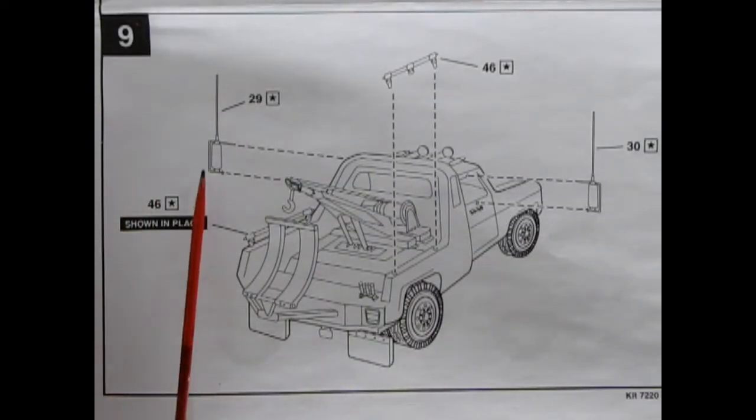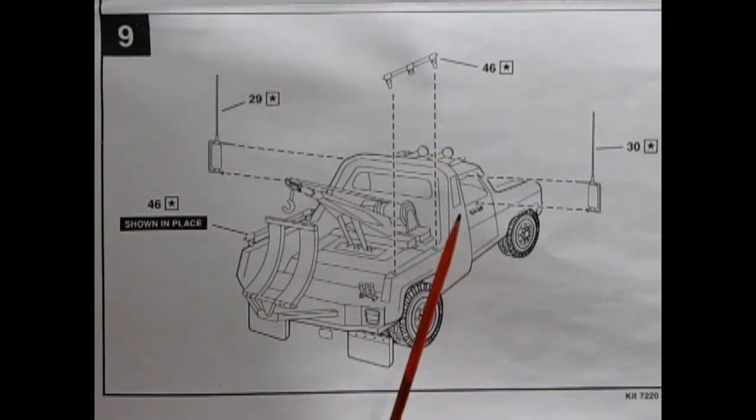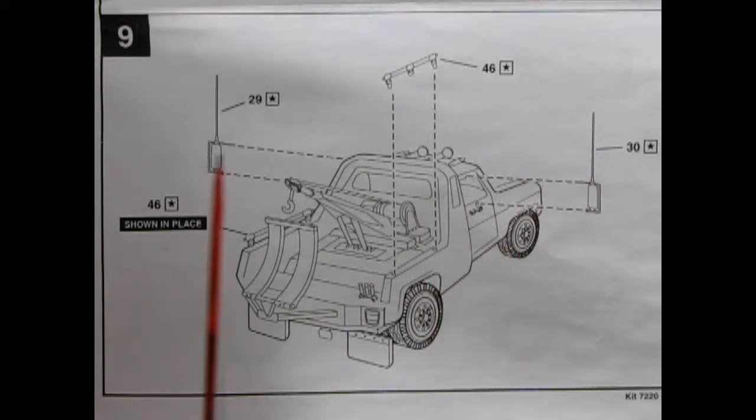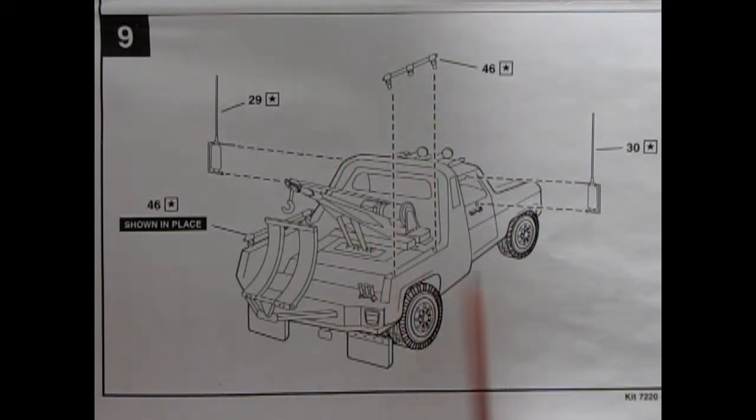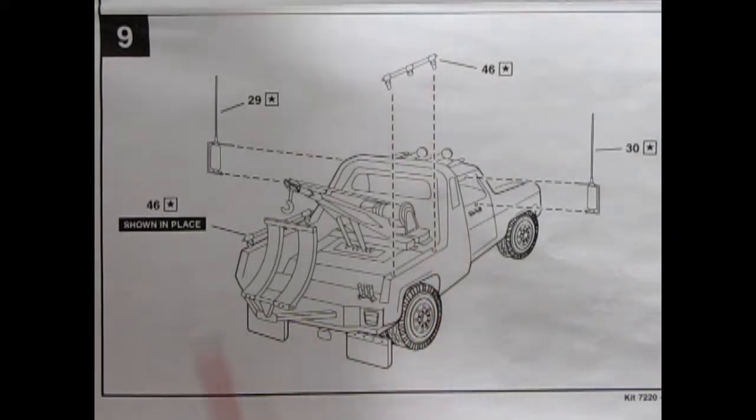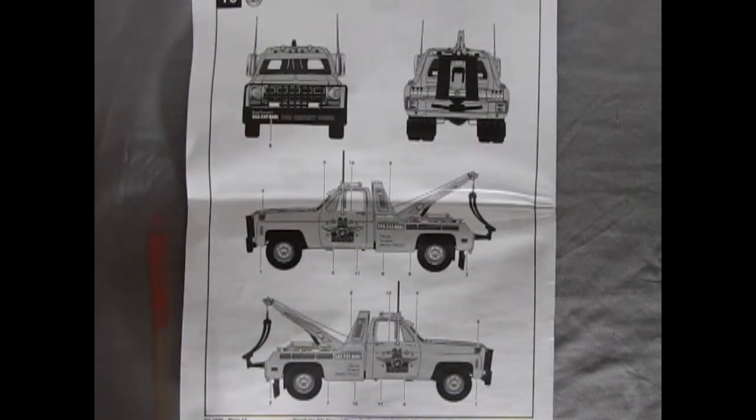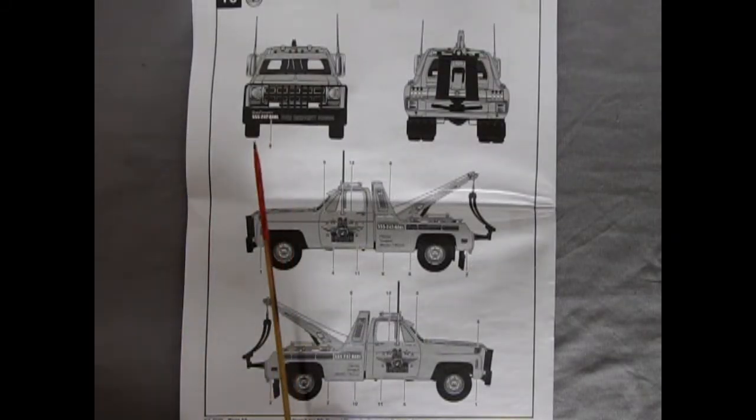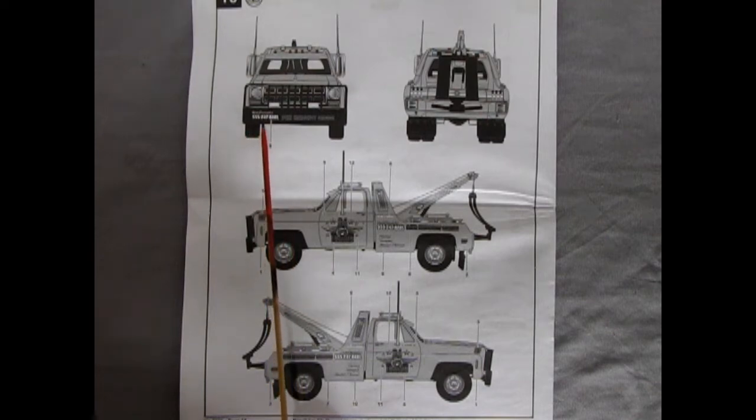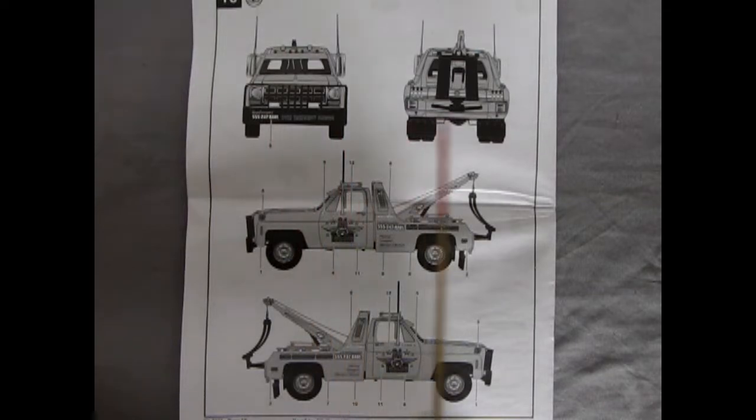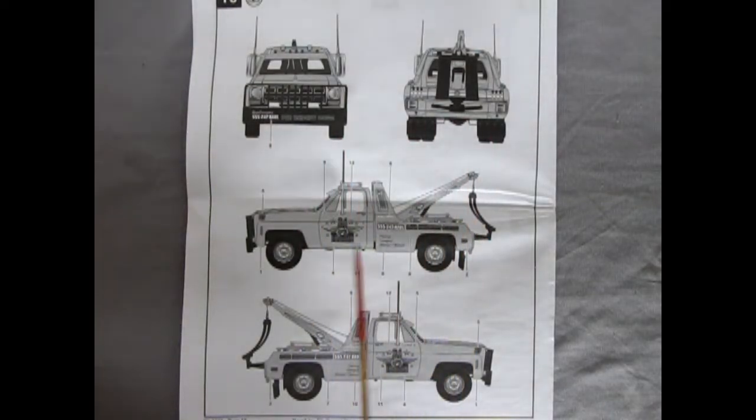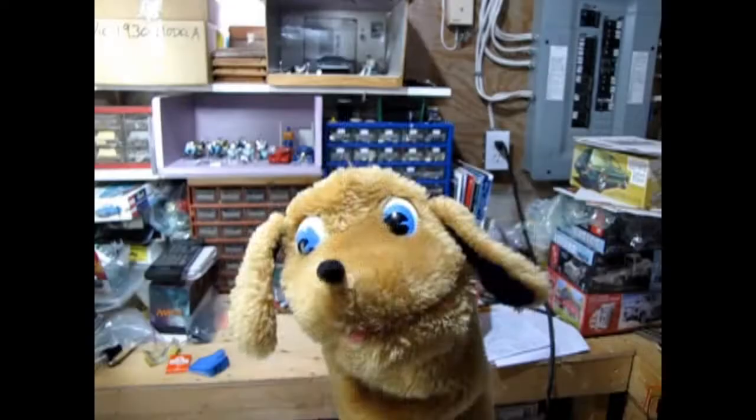Panel 9, our final panel shows the chrome mirrors being glued onto the side along with the antennas. Then we've got our handrails being glued onto the back of the truck bed. Our final panel shows where all the decals go. Here we have the 555-247-Hall for the phone number for this tow truck as well as the back, and then we've got the nice sides of our tow truck with the emblems.